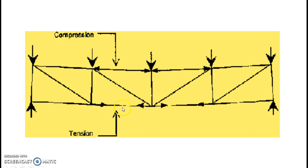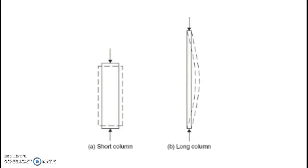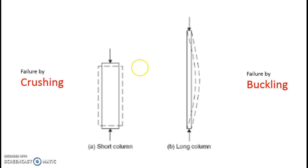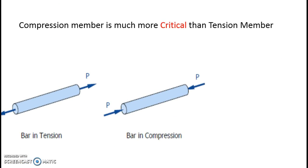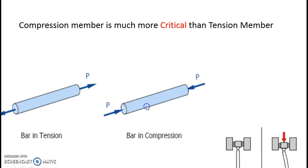Diagonal members are sometimes subjected to compression and sometimes tension, depending on the analysis. A compression member, basically a column, is divided into two parts: short column and long column. A long column generally fails in buckling whereas a short column generally fails in crushing. Compression members are much more critical than tension members because when pushed from both sides there is a tendency to buckle, and as the load increases, the buckling tendency increases.